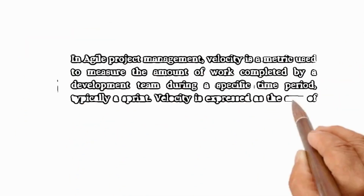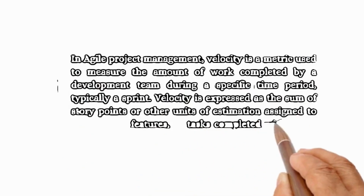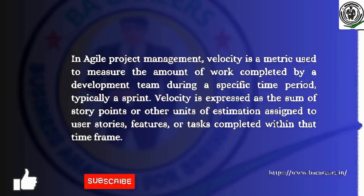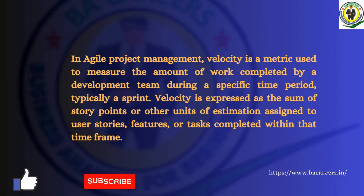In Agile Project Management, Velocity is a metric used to measure the amount of work completed by a development team during a specific time period, typically a sprint. Velocity is expressed as the sum of story points or other units of estimation assigned to user stories, features, or tasks completed within that time frame.